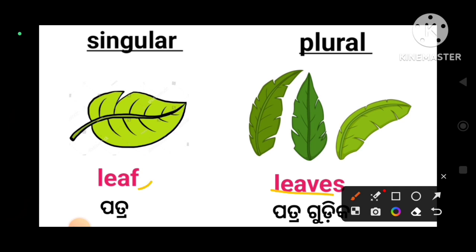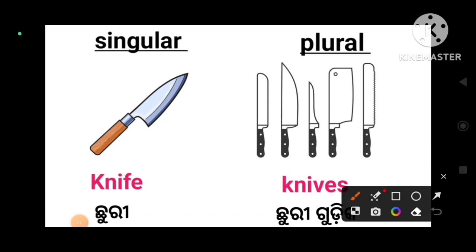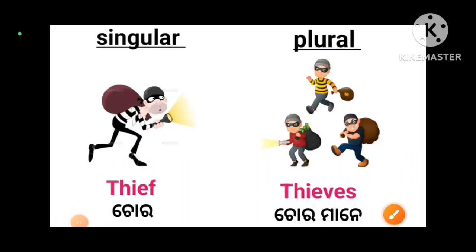Notice the difference: leaf becomes leaves — the F changes. Next: knife. Knife means one knife (churi). The plural form of knife is knives — K-N-I-V-E-S. Knives means more than one knife. The singular and plural rule is usually just adding S or ES, but today's class is about different forms — different words meaning different plural forms.